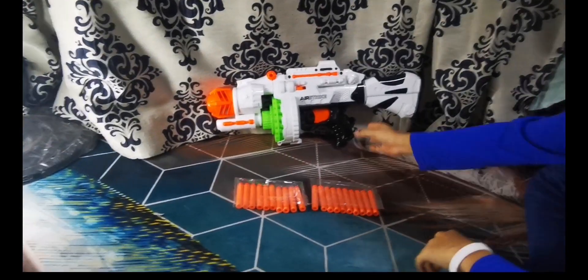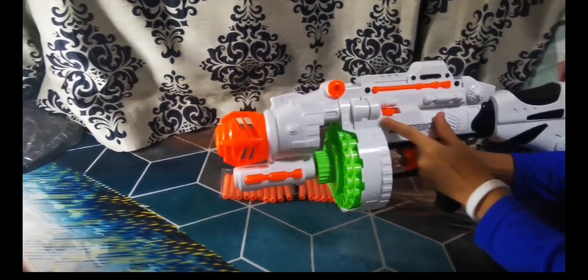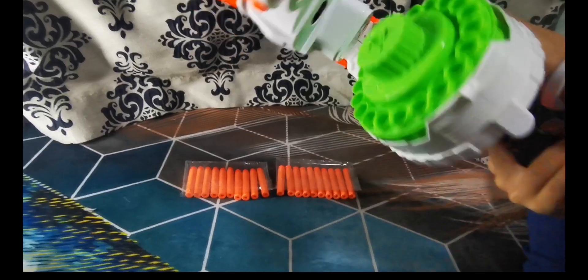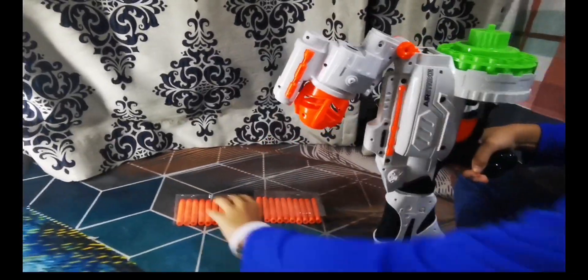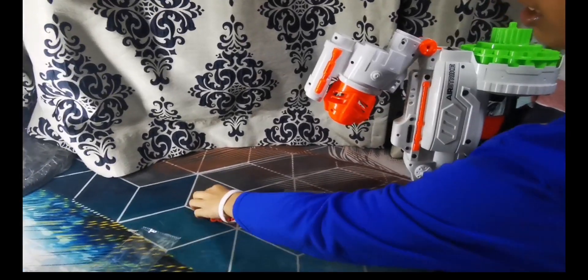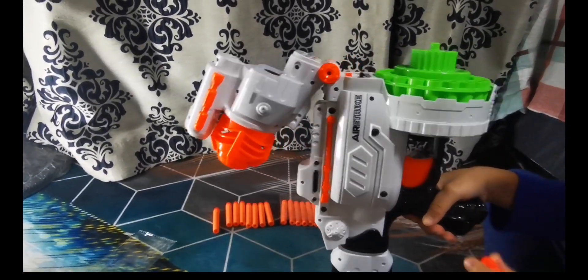You push this button back and the gun opens from the front. There's a round circle to put your bullets in. Now I'm going to put the 20 normal bullets in.